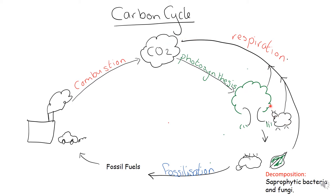When the plants and animals die, they get broken down by saprophytic bacteria and fungi via the process of decomposition. Once they have broken it down to release glucose or other simple sugars, they can then respire this and that releases more carbon dioxide back into the atmosphere.